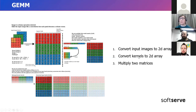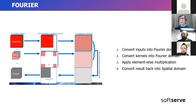A similar idea is used in the Fourier algorithm. We take the input image and kernel, transform both into the Fourier domain, multiply them element-wise in the Fourier domain to obtain a 2D matrix, and then convert this matrix back to the spatial domain to obtain the result of the convolution.